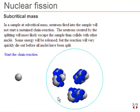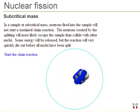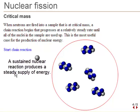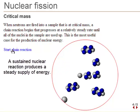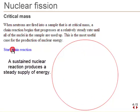At subcritical mass, a sustained nuclear chain reaction is not possible. At the critical mass, a sustained nuclear reaction can occur, which produces a steady supply of energy. This is what nuclear reactors do.